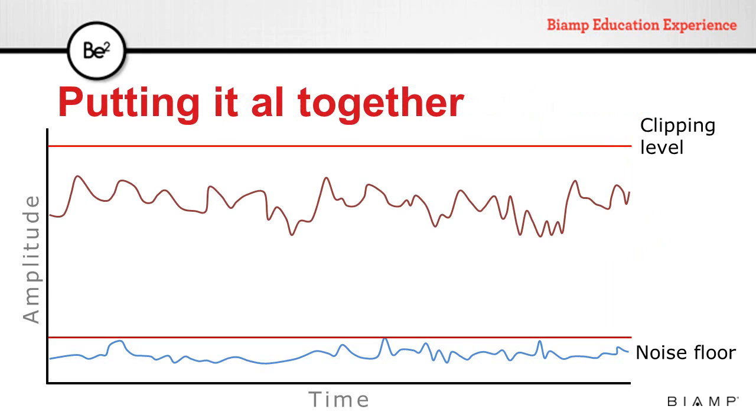When we pass an audio signal through a sound system, we have new ratios that define where that signal is in relation to the system limitations. On the lower side, the difference between the lowest level of the signal and the system components' noise floor defines the signal-to-noise ratio.